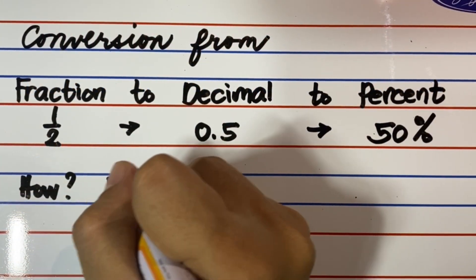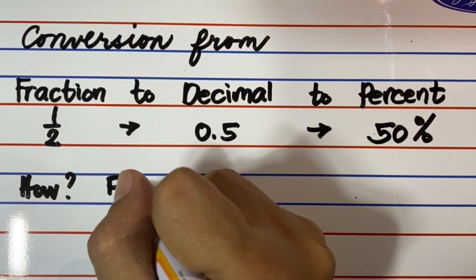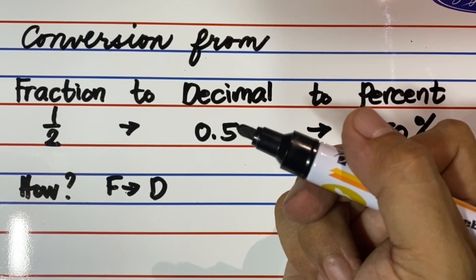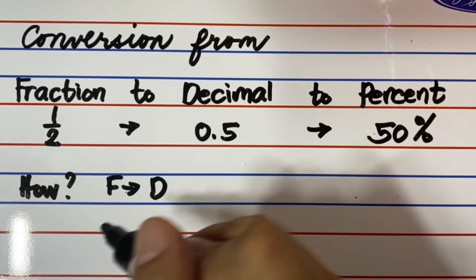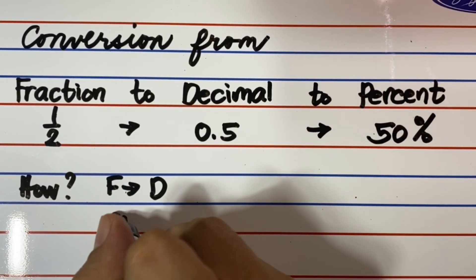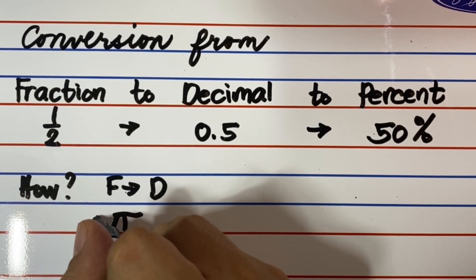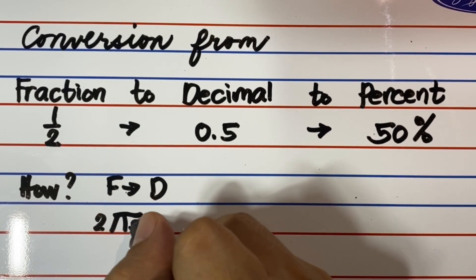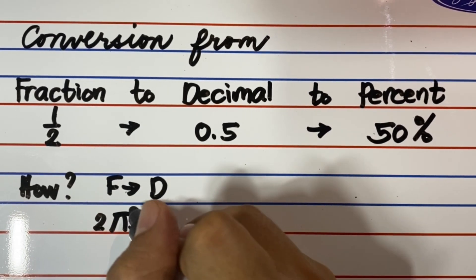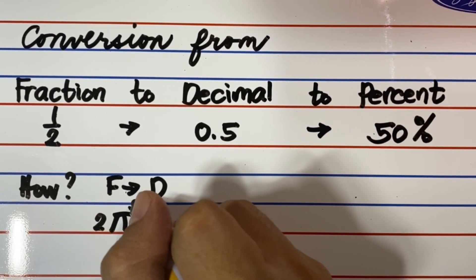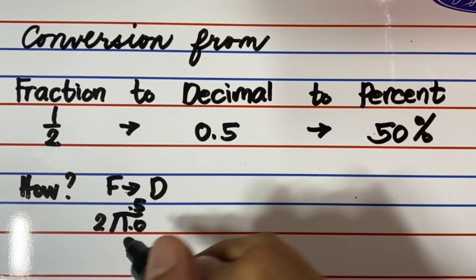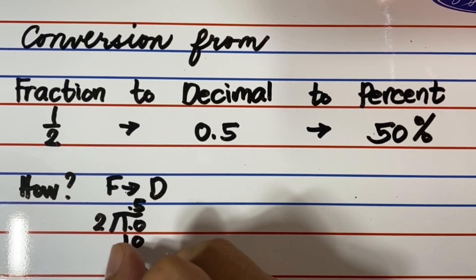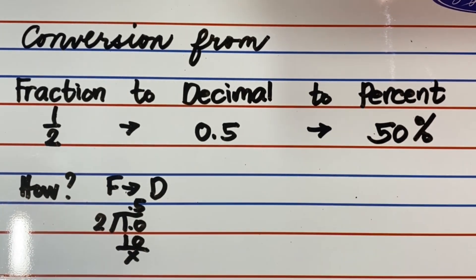How do we convert one over two, or one half, to decimal? We simply divide the numerator, which is one, by the denominator, which is two. Watch and learn. One over two, or one half, becomes 0.5 or five-tenths.